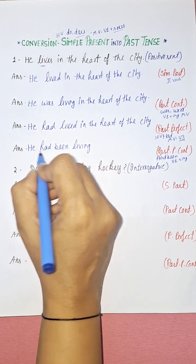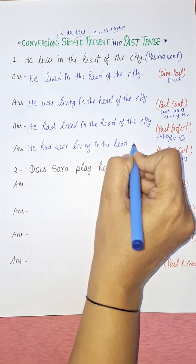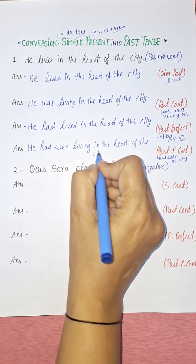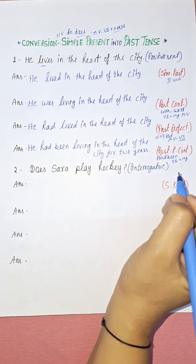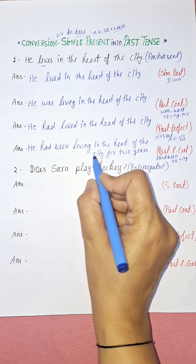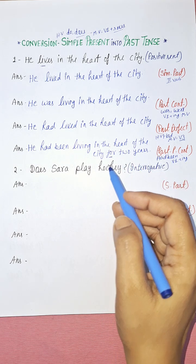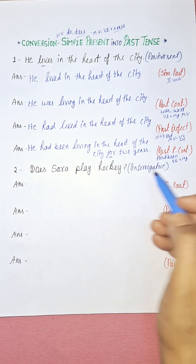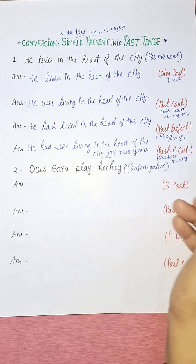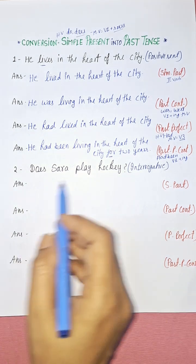So it becomes: 'He had been leaving in the heart of the city for two years.' In past perfect continuous tense we also use 'for' and 'since' — 'for' is used for a period of time, and 'since' is used for a point of time. These are also recognition markers of past perfect continuous tense.